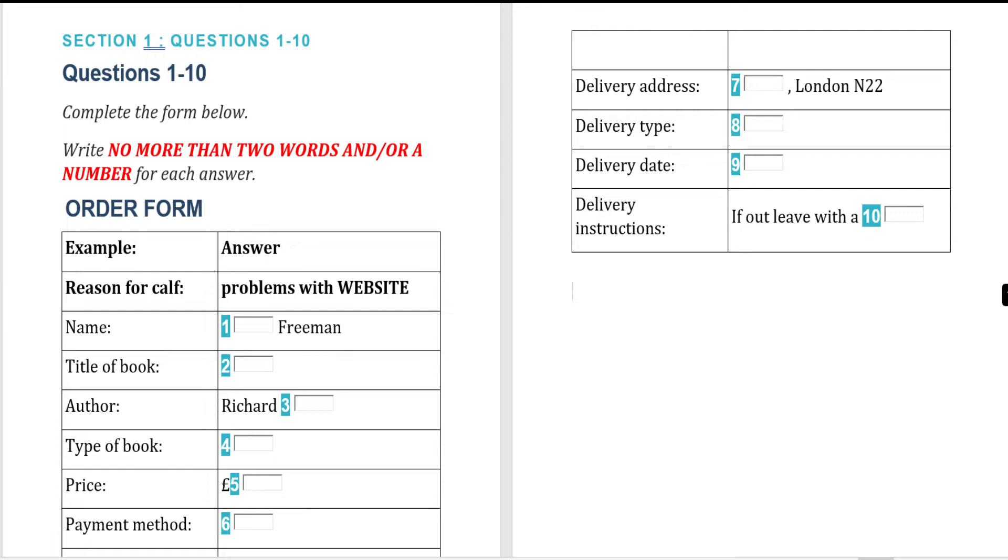Now turn to section one. Section one. You will hear a telephone conversation between a customer and a sales assistant for a mail order company. First, you have some time to look at questions one to six.